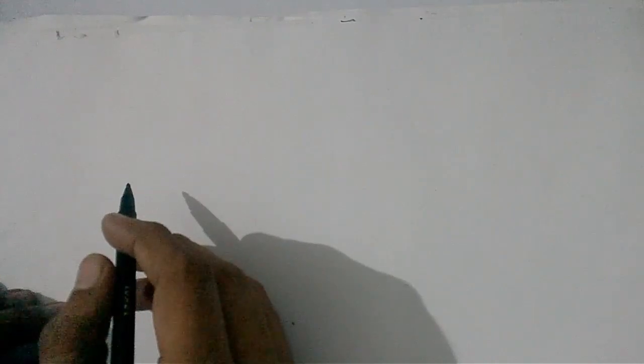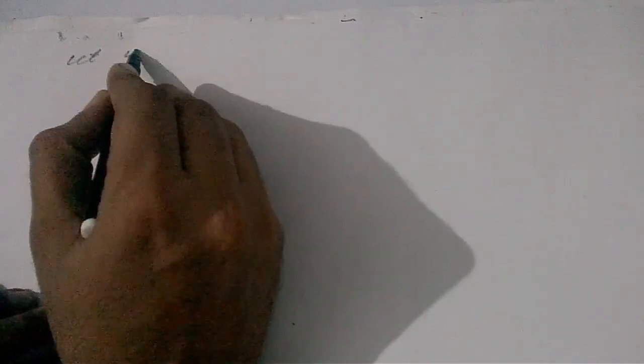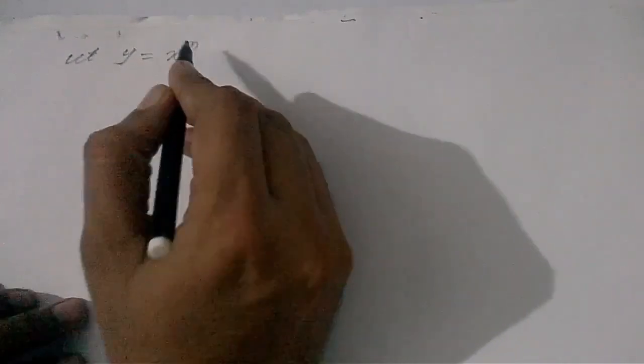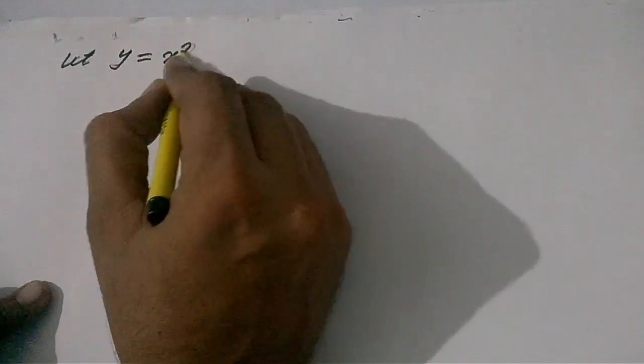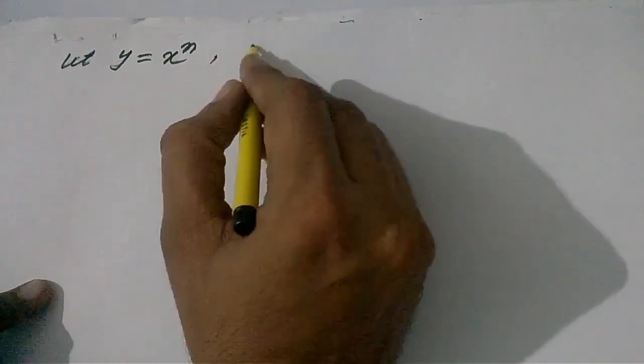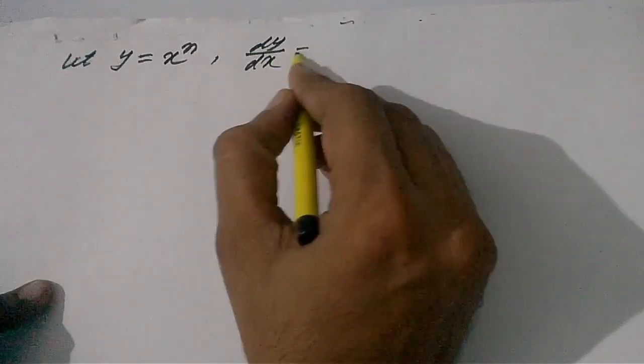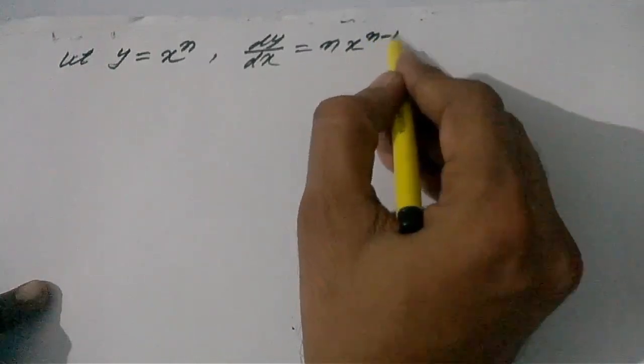In the continuation of my previous video, in which I have explained the basic meaning of dy upon dx, I am going to explain the differential coefficient of x raised to the power n with the same concept. So let y be equal to x to the power n, and its differential is dy over dx is equal to n x to the power n minus one.